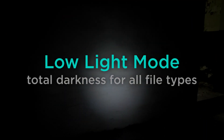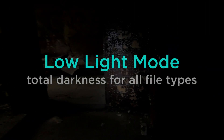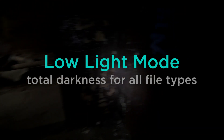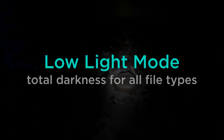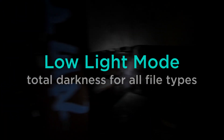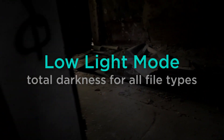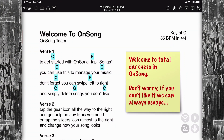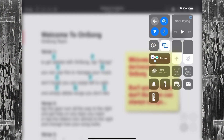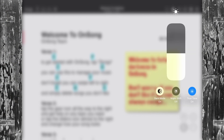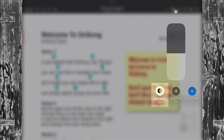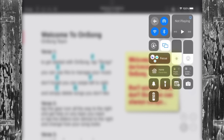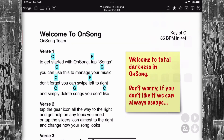So if you use PDF charts, integrate with Song Select, or import your own images or word files into OnSong, we've crafted a new way for you to enjoy your content when the lights go out. OnSong automatically switches into low light mode based on the dark mode setting in iOS. But if you don't have dark mode enabled, you can toggle it to low light mode in OnSong.